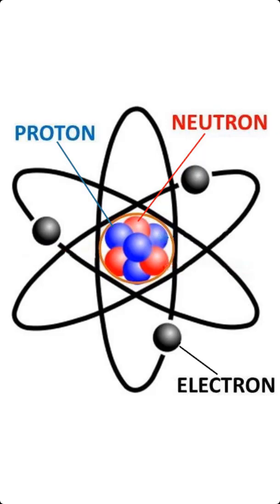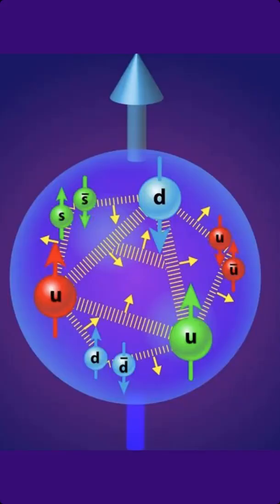Electrons can't be further subdivided. However, inside protons and neutrons, there are smaller particles like quarks, leptons, and bosons.